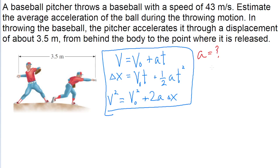But the variables that we have are the final speed of the ball, which is 43 meters per second. That's the speed that the ball has by the time the pitcher throws it. We can assume that the initial speed is zero, and the change in position is 3.5 meters.